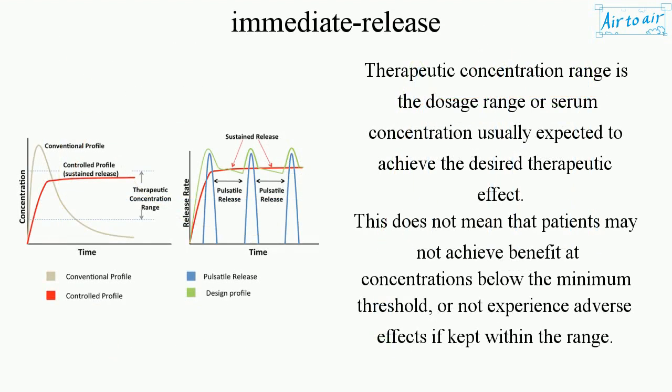Therapeutic concentration range is the dosage range or serum concentration usually expected to achieve the desired therapeutic effect. This does not mean that patients may not achieve benefit at concentrations below the minimum threshold, or not experience adverse effects if kept within the range.